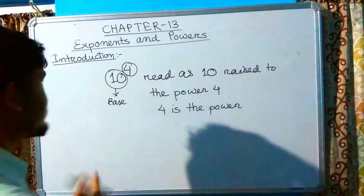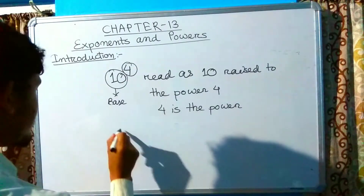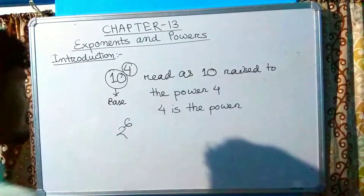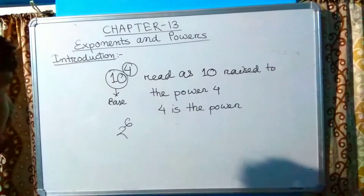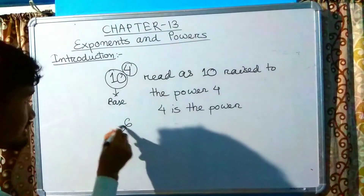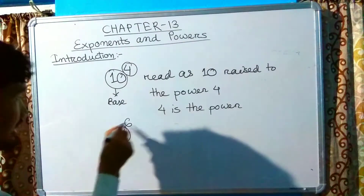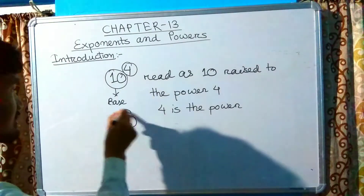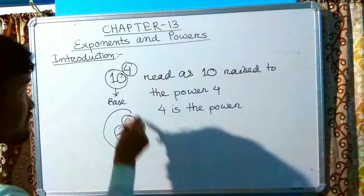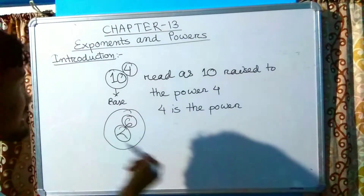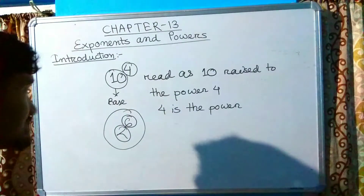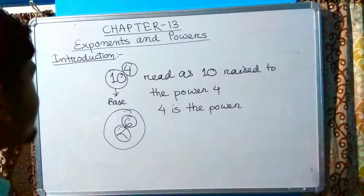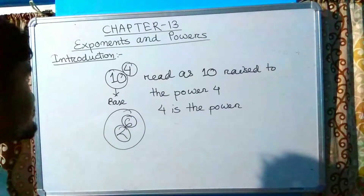Another example: 2 raised to the power of 6. Here, 2 is the base and 6 is the power. As a whole, 2 raised to the power of 6 is the exponential form.